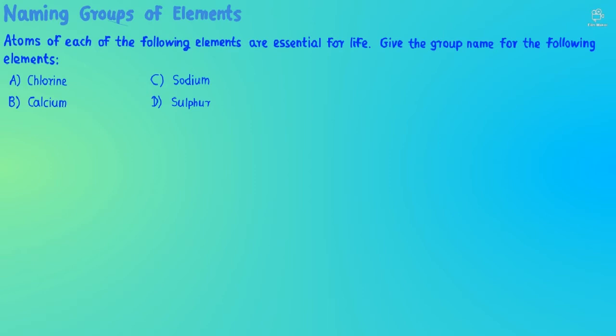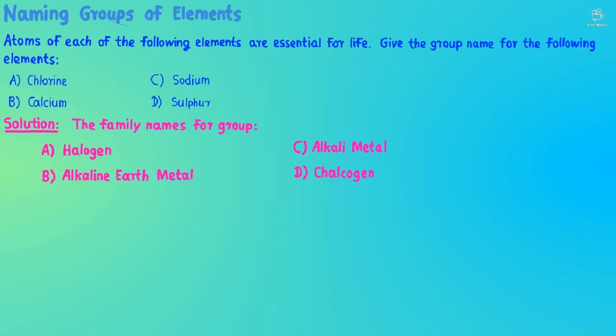In naming groups of elements, consider atoms of the following elements that are essential for life, and give the group name for each. Chlorine: its group name is halogen. Calcium: its group name is alkaline earth metal. Sodium: its group name is alkali metal. Sulfur: its group name is chalcogen.